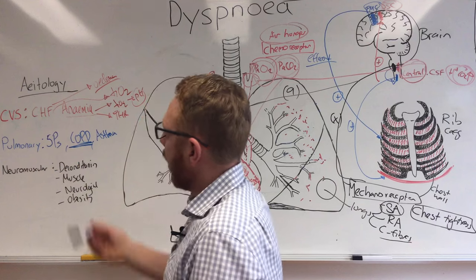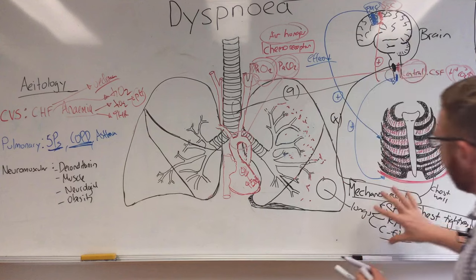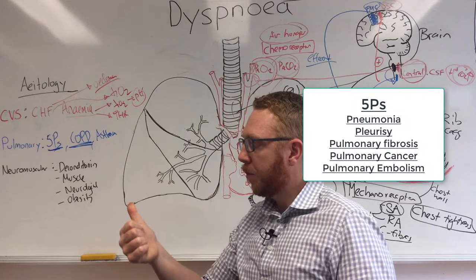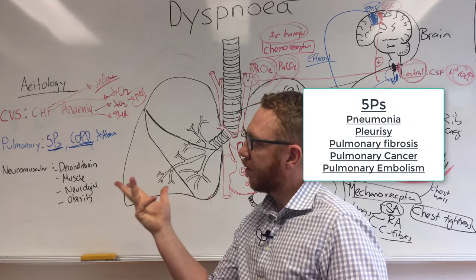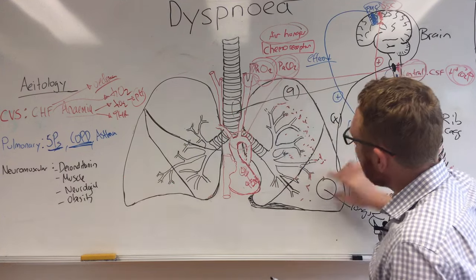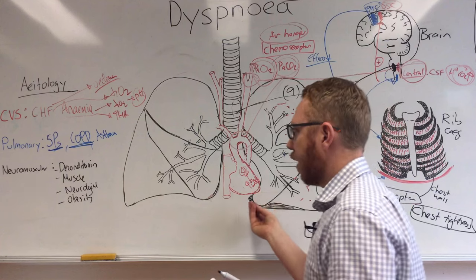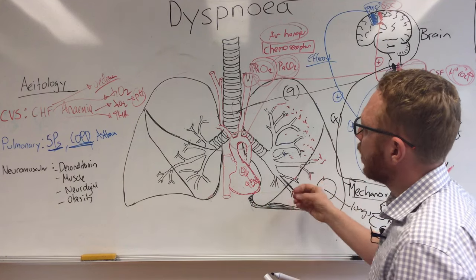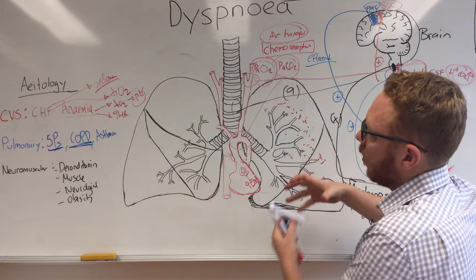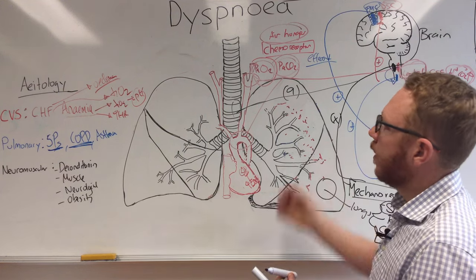Going across into the pulmonary etiologies, the five Ps basically all fit within the mechanical reception issue. The five Ps are: PE, pleurisy, pulmonary cancer, pulmonary fibrosis, and pneumonia. These are essentially affecting the way that the lung is expanding or the irritation associated with it. With pleurisy and certain types of cancers located around the lung, that would cause irritation. Pulmonary fibrosis within the lung tissue would change its compliance and the way it expands. Similarly, pneumonia would fit in the same mechanism.